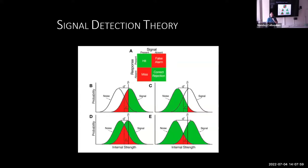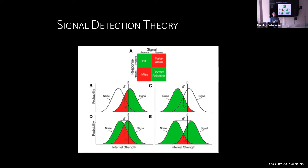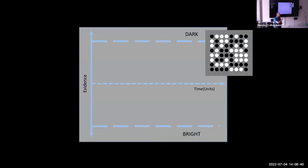Some of the earliest and still prominent accounts of bias use the signal detection framework. The basic idea is you get some feeling of how dark a stimulus is, then compare that impression to some criterion. If it exceeds the criterion you say 'dark,' if it's below you say 'bright.' Bias is simply the relative positioning of that criterion. You can move it around to make it more or less easy to say dark or bright. But I want to focus on a dynamic extension of signal detection theory: response time or evidence accumulation models.